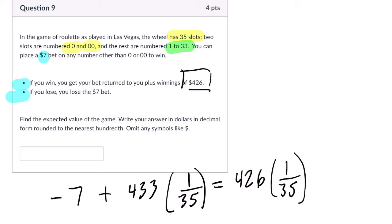All the other times, you're going to lose $7 and you're not getting anything back. These are equivalent statements, and they will get you the same expected value.